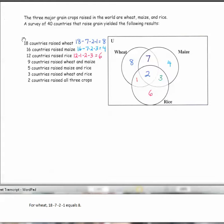And for wheat, 18 minus 7 minus 2 minus 1 equals 8.